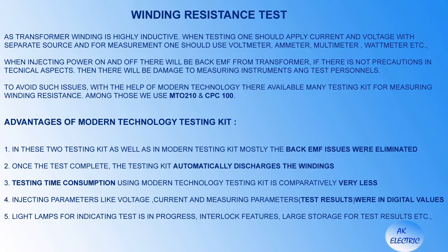To avoid such issues, with the help of modern technology there are many testing kits available for measuring winding resistance. Among those, we use MTO210 and CPC100. In these and other modern testing kits, the back EMF issue is largely eliminated — once the test is complete, the testing kit automatically discharges the windings. Testing time using modern technology kits is comparatively very less. Injecting parameters like voltage and current, and measuring parameters, are in digital values. Light lamps for indicating test in progress, interlock features, and large storage for test results are added advantages.